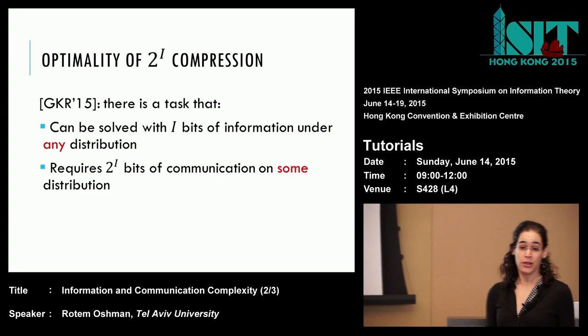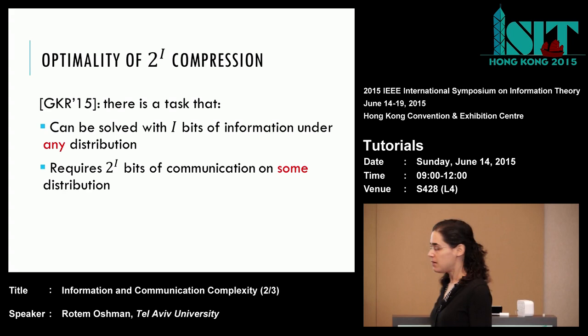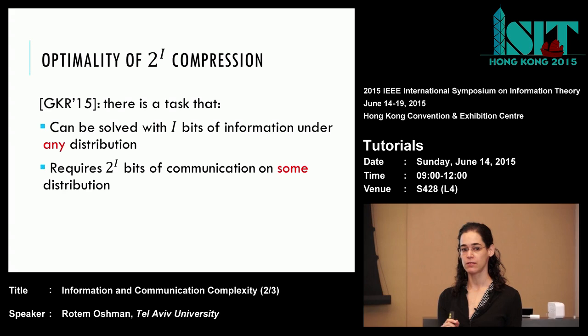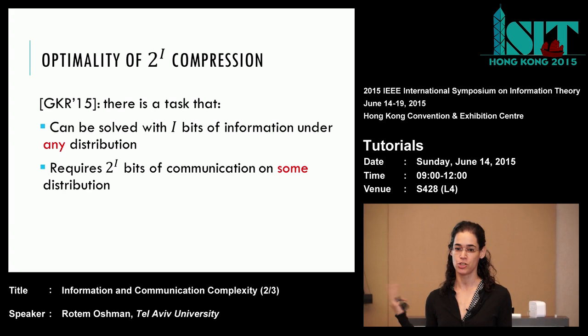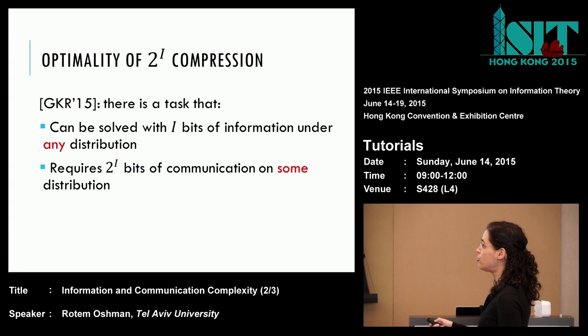I did mention that perfect compression is not possible. Even worse, it turns out that 2^i is the best you can do in some settings. If you want compression completely independent of the communication of the original protocol, you can't do any better than 2^i.